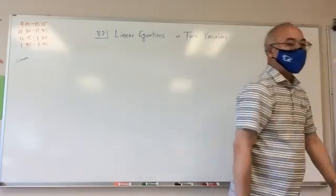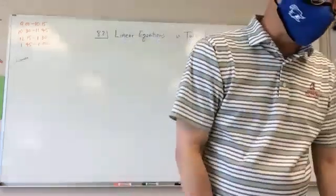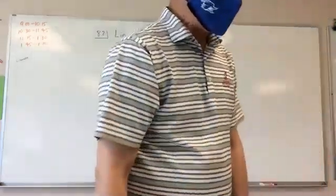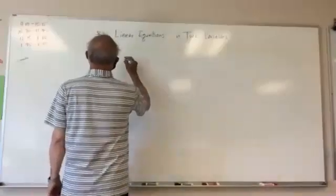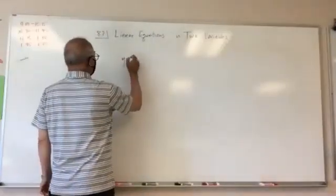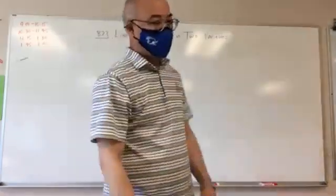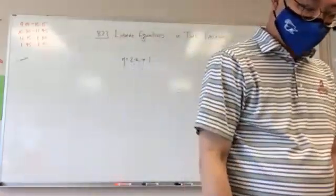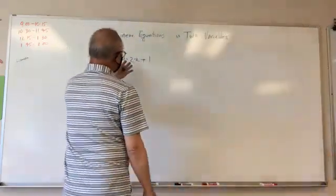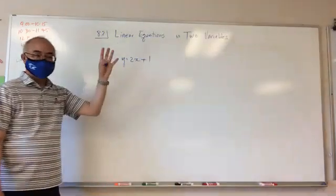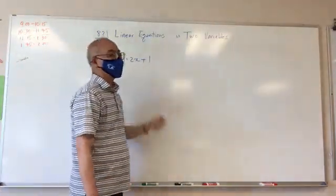We're going to get into linear equations in two variables. A linear equation is something usually written in this format: 2x plus one. Usually it's written as y is equal to something times x plus or minus something. This is what a linear equation looks like.